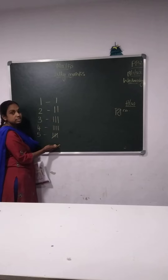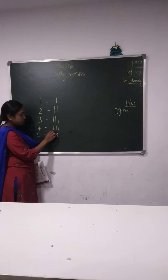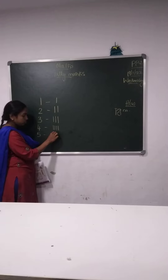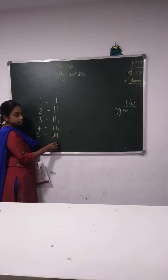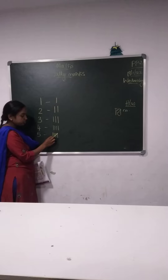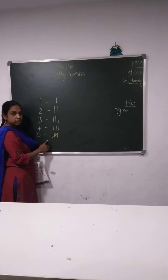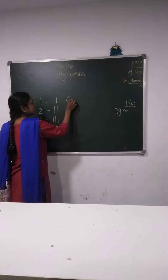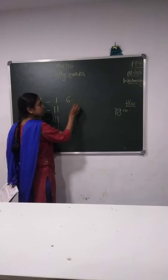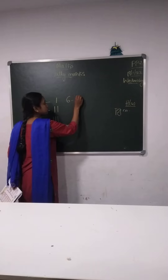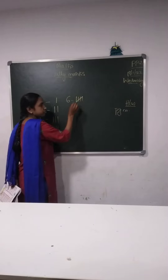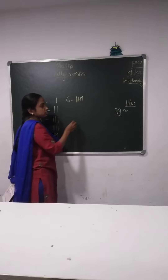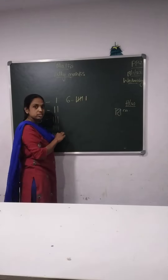So this is called tally marks. For 5 you will draw 1, 2, 3, 4 and then for 5 you will put the slash. So this is called tally marks. Next is 6 — so how many lines we will draw here? 1, 2, 3, 4, 5. For 5 you have to put a slash, then one more line — 6.